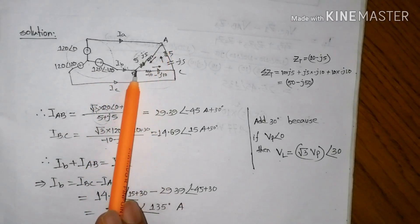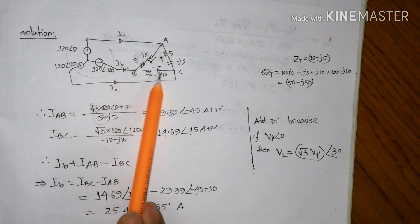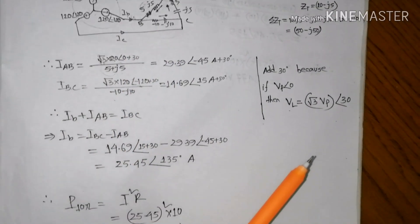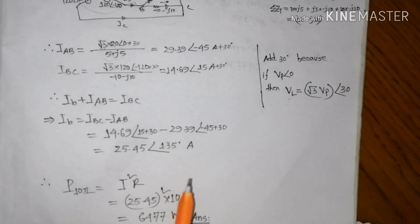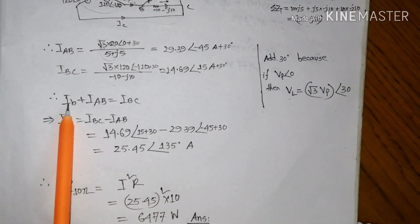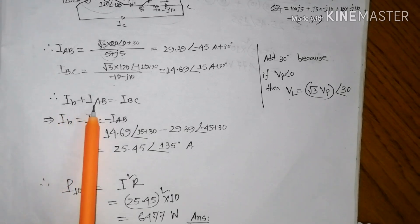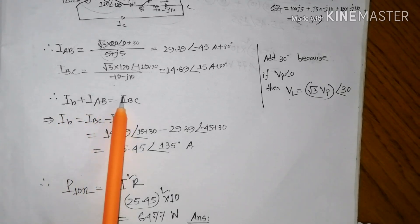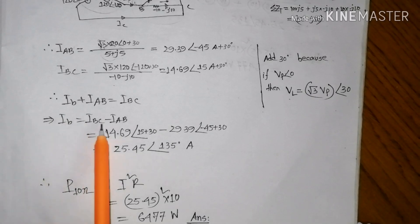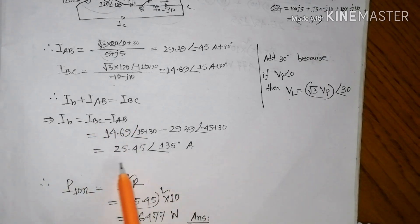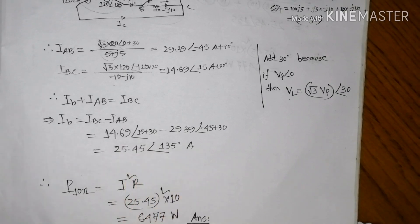Using KCL: IB plus IAB equals IBC minus IAB. The result is five point four five at an angle of 135 degrees. Then we can calculate the current power.